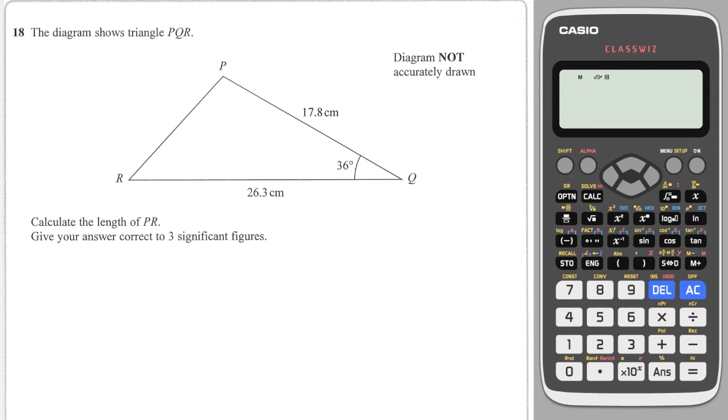Question number one is a straightforward question where you need to find this side. I'm going to label it little a so I can label the angle capital A. I've got the two sides either side of the angle so this is going to be the cosine rule.